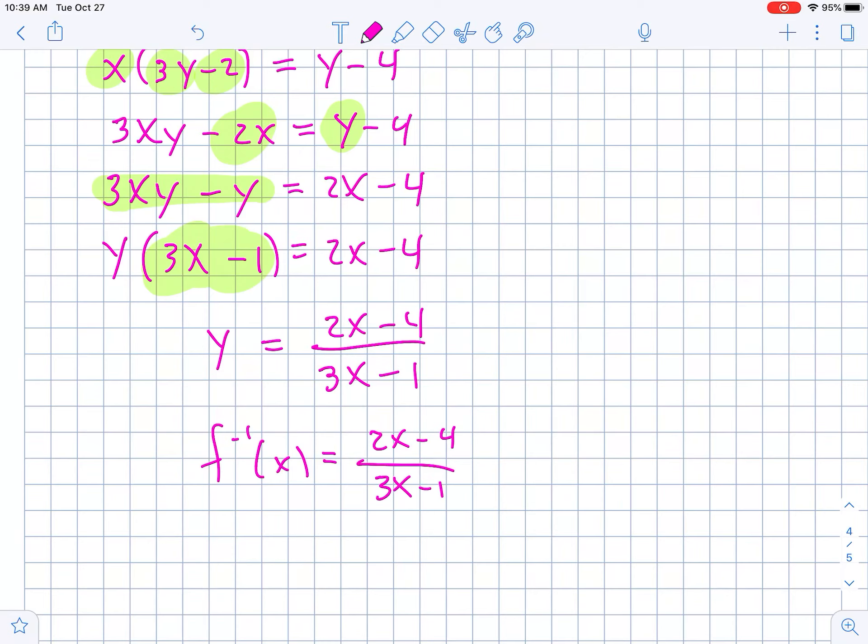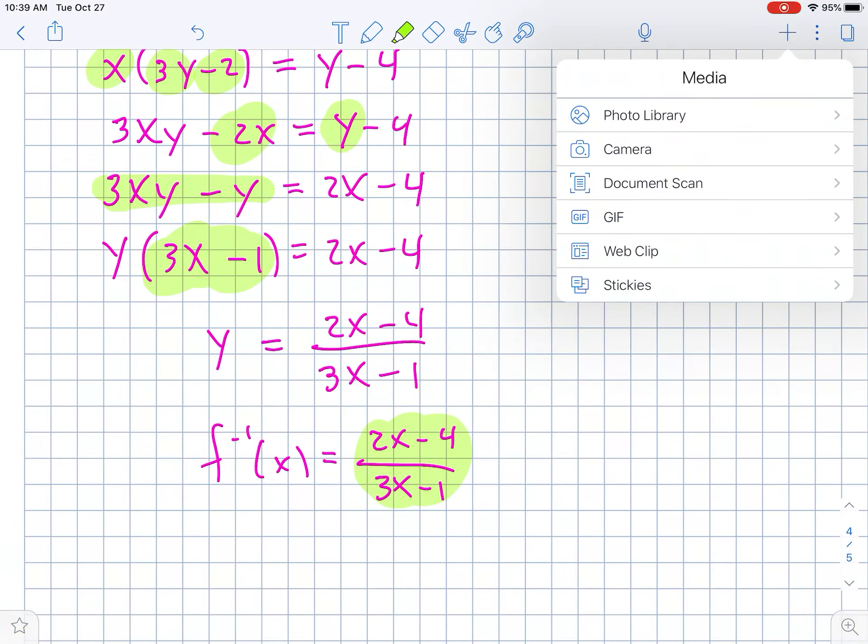And then we're done! So, f to the negative 1 of x is 2x minus 4 over 3x minus 1. Hey, pop quiz, hotshot! What would the vertical and horizontal asymptotes of that be? You should be able to tell me that. Alright guys, there's a word problem in the book for example 7. Please look that over. Email me if you have any questions.